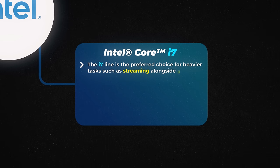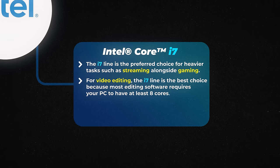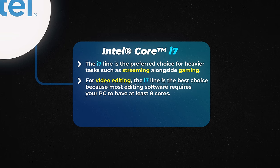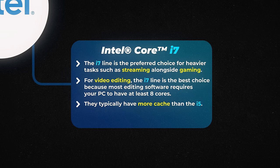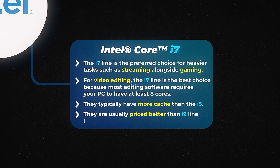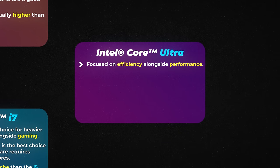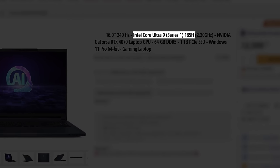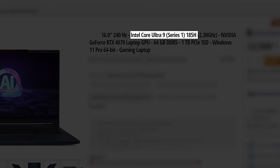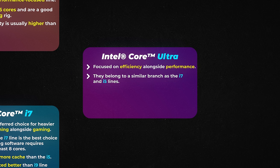The i7 line is the preferred choice for heavier tasks, such as streaming alongside gaming. If you are looking for a PC for video editing, the i7 line is the best choice because most editing software requires your PC to have at least eight cores. They typically have more cache than the i5. In laptops, they can be a sweet spot because they are usually priced better than i9 line laptops while offering similar performance. Intel also has a new line of CPUs focused on efficiency alongside performance, offered in the mobile segment where both performance and efficiency are important.